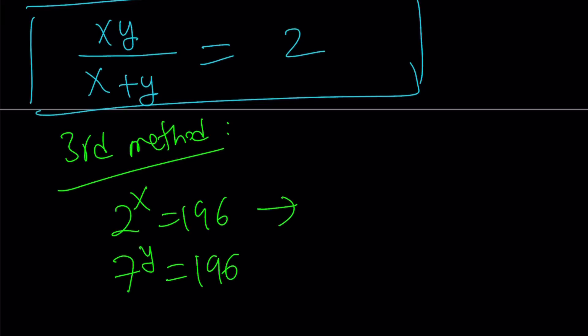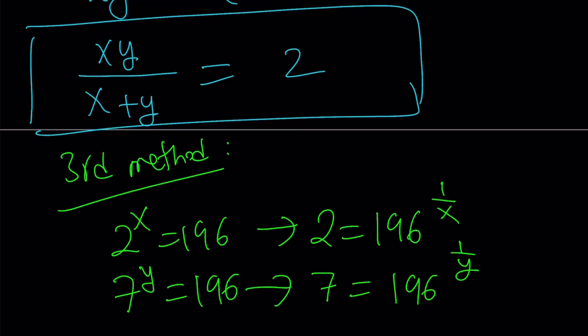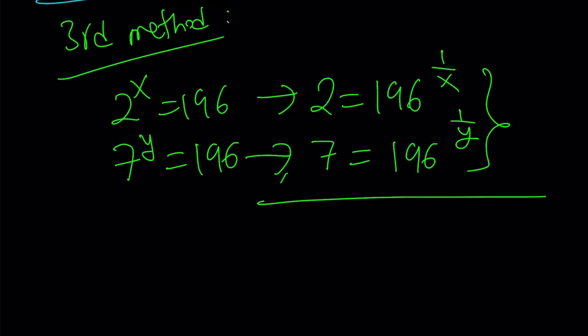Raise both sides to the power 1 over x. 2 becomes 196 to the power 1 over x. And the second one, same thing, raise both sides to the power 1 over y. You get 7 equals 196 to the power 1 over y. Now, why did I do this? Because I'm looking for xy over x plus y. And I can get that by adding 1 over x plus 1 over y, maybe. Or I can get something like that. So this is kind of like a system. Let's go ahead and multiply these three equations.